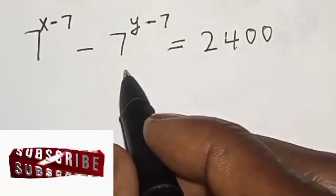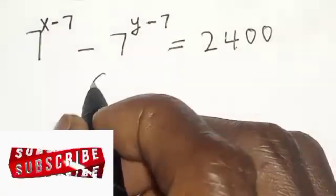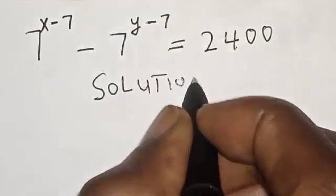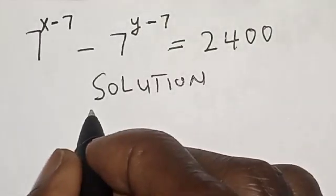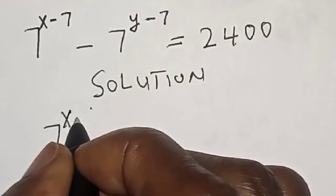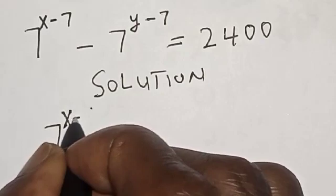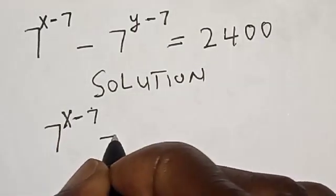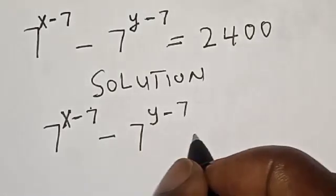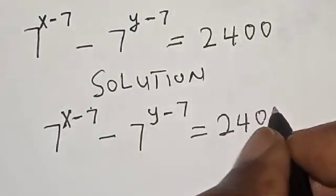Please like, share, comment and subscribe. Solution: The given equation is 7 raised to power x minus 7, minus 7 raised to power y minus 7, is equal to 2400.